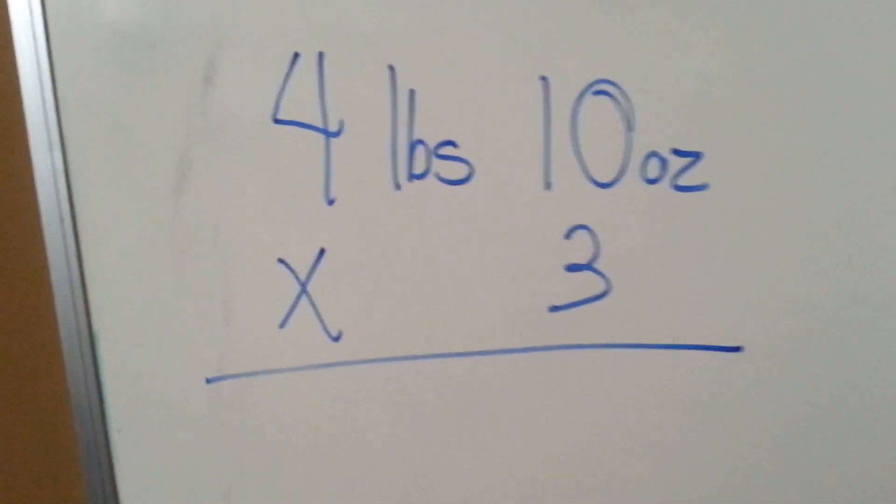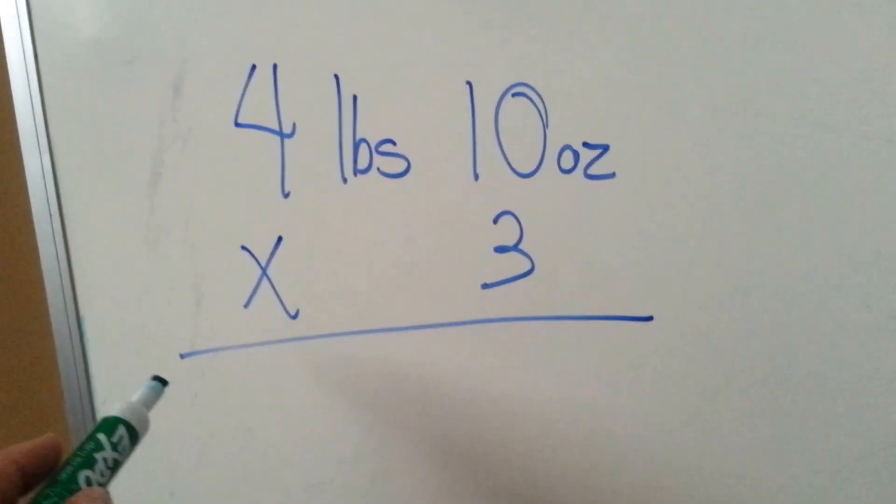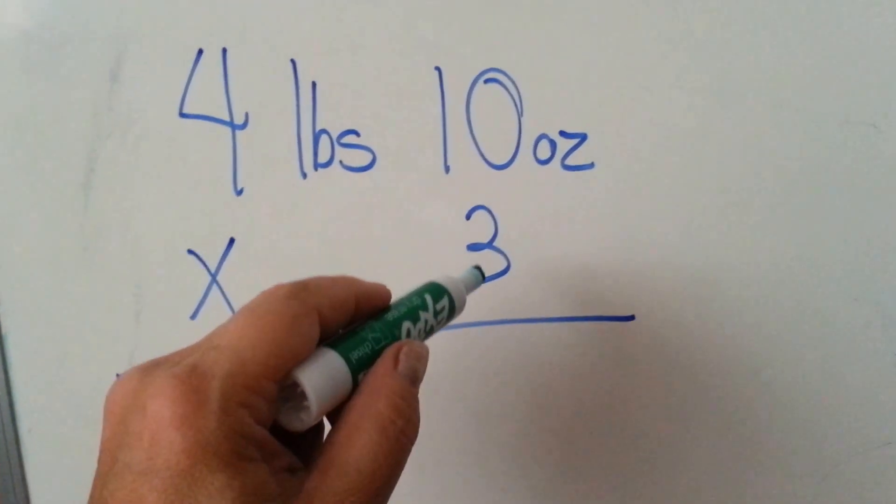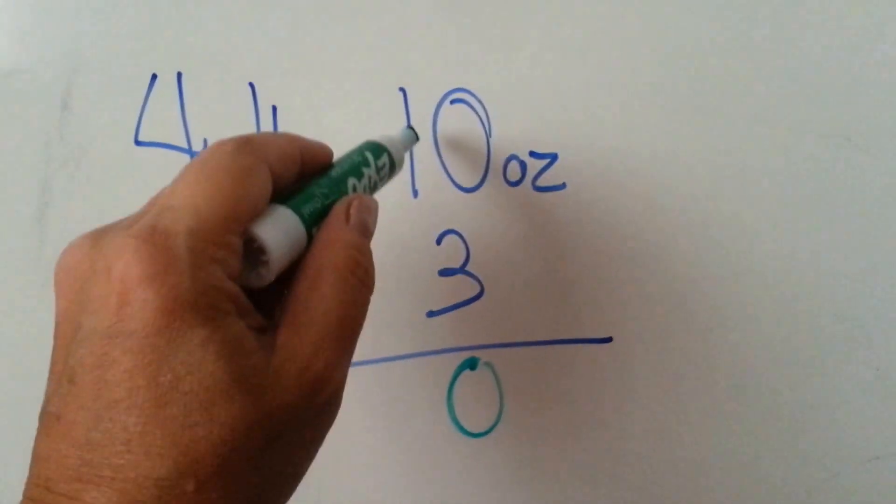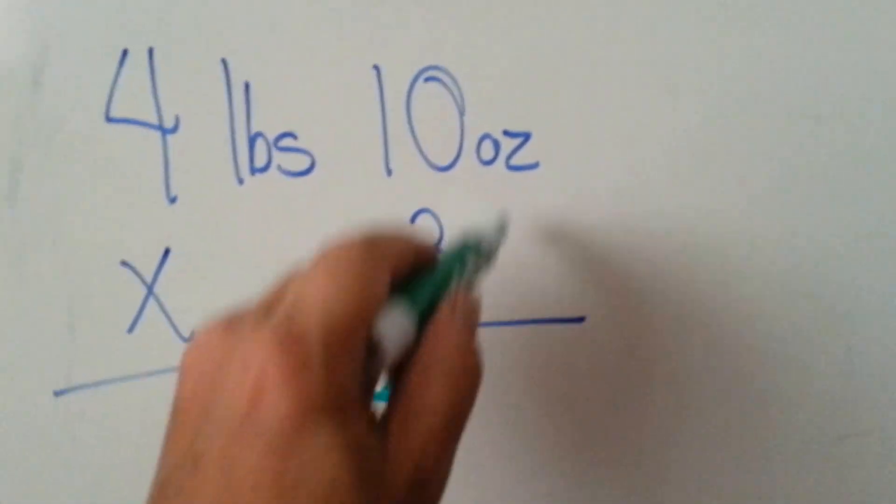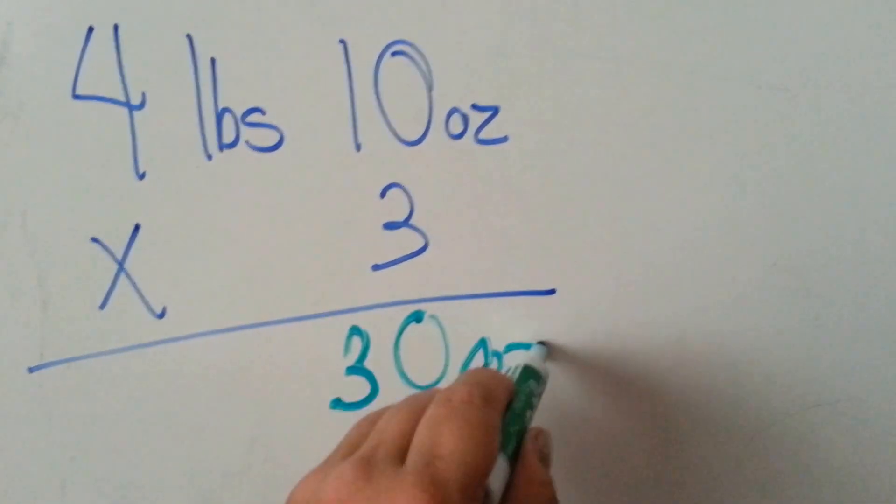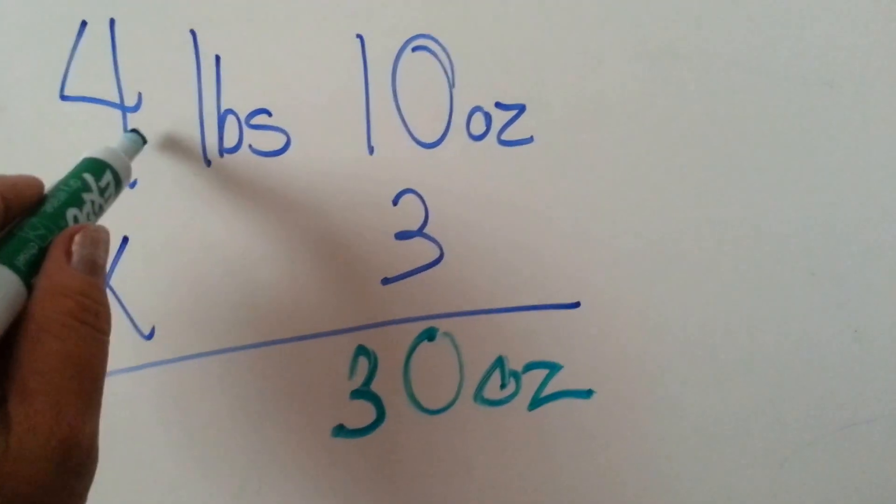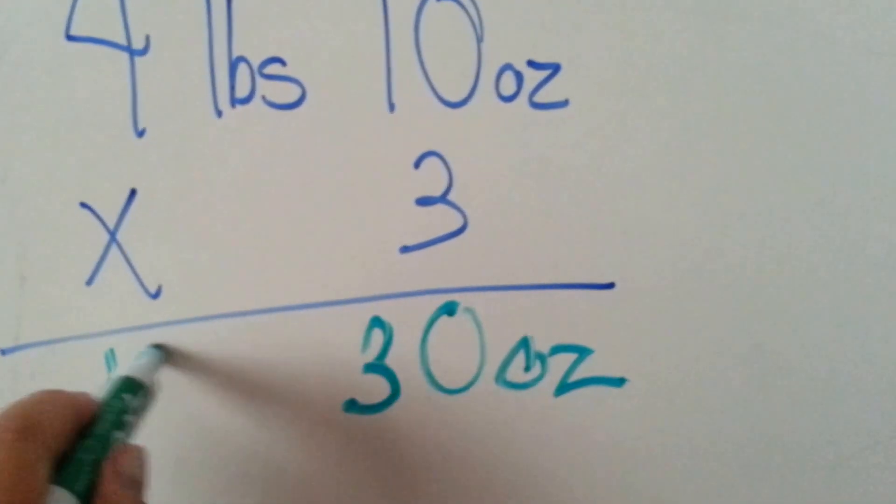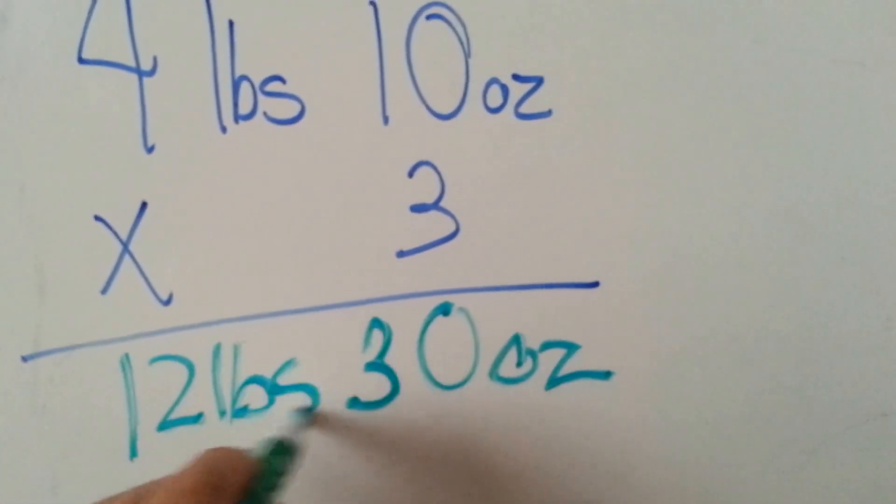So let's take a look at 4 pounds 10 ounces times 3. We're going to multiply the 3 by the 0 and get 0. We're going to multiply 3 times 1 and get 3, and we always put our labels, so that's 30 ounces. Now we're going to multiply the 3 times the 4 pounds. 3 times 4 is 12.